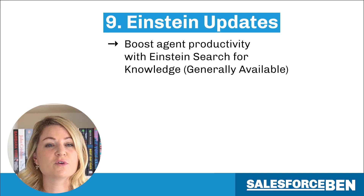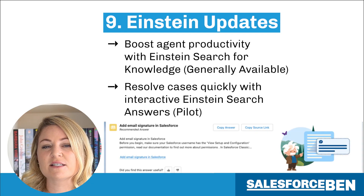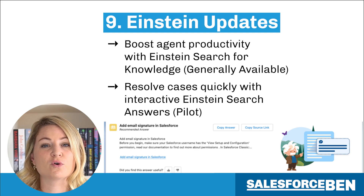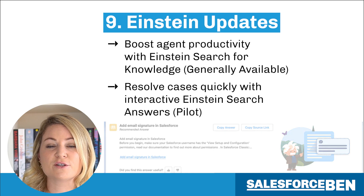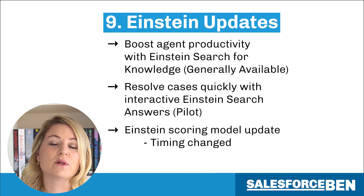Of course, we had to mention the new Einstein updates, and these are ones to look out for, especially if you use Einstein scoring in any capacity. First up, boost agent productivity with Einstein Search for Knowledge is now generally available. Einstein Search for Knowledge can help your service agents find relevant articles faster, in turn reducing the amount of time it takes to resolve a case. Next, resolve cases quickly with interactive Einstein Search Answers is now in pilot. This new feature will extract the most useful information from a knowledge article and display three lines that can then be copied by service agents and shared. And finally, Einstein scoring model timings have been changed, so lead and opportunity models will be refreshed once a month instead of every 10 days, and this will improve performance.